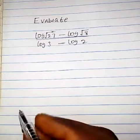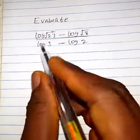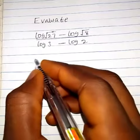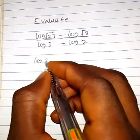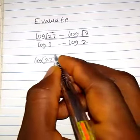How do we evaluate the following log rating? So we have log root 27, which can be written as log 27 raised to the power half.